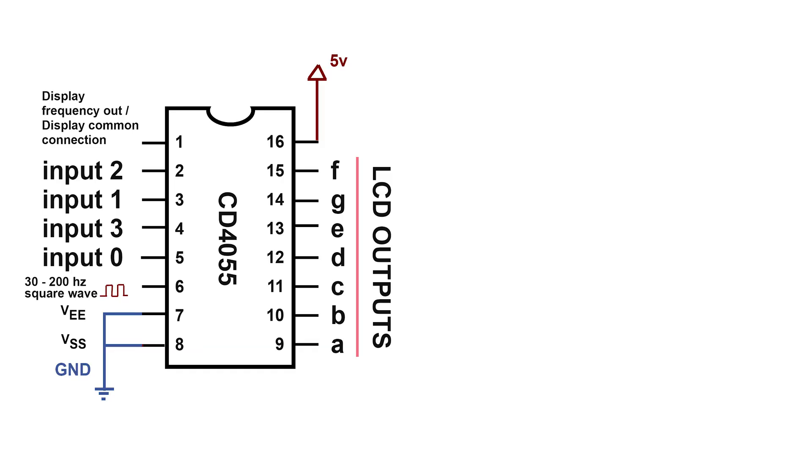Then at the bottom, we've got VEE and VSS. Those can both be connected to ground to make this work. There will be some circuits you'll see online where VEE is connected to something like minus 10 volts, but it isn't required.